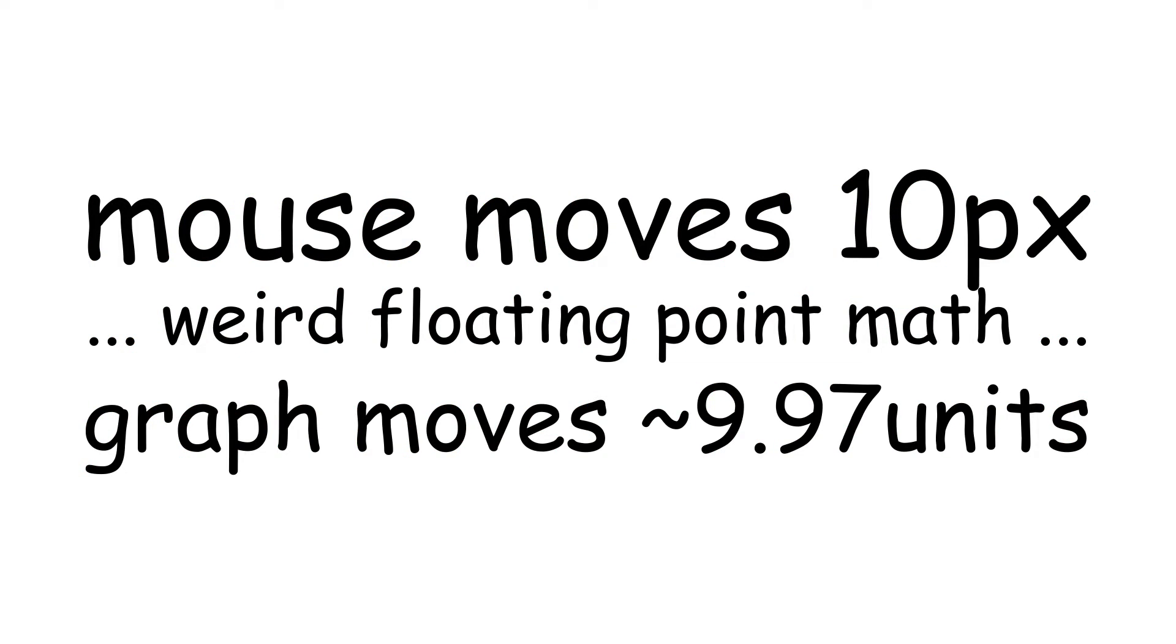While this is more speculative, I do believe it's due to a similar effect, where there's a slight discrepancy between the conversion of pixels from moving our mouse and units offset by the graph, causing the graph to appear at a very close, but slightly different position as you move it around.